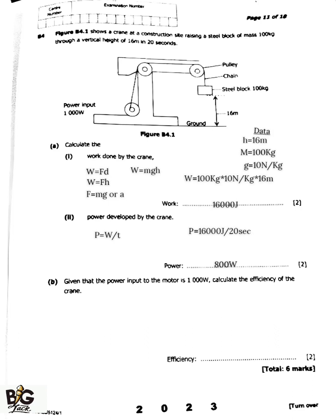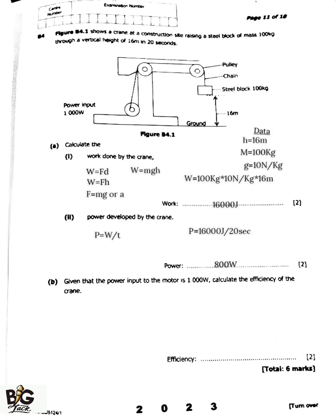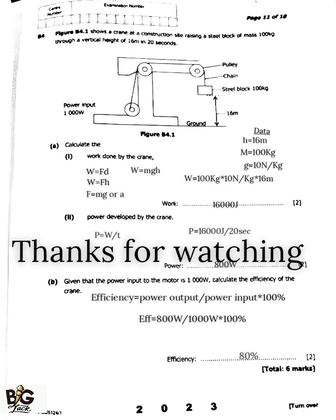The last one, which is question B, given that the power input to the motor is 1000 watts, calculate the efficiency of the crane. So efficiency is equal to power output divided by power input multiplied by 100 percent. Now in this case, we have the power output which is 800 watts divided by 1000 watts, which is the power input, multiplied by 100 percent. So our answer for the efficiency here is going to be 80 percent.